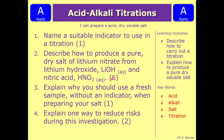Question three says: explain why you should use a fresh sample without an indicator when preparing your salt. Think back to when I explained why we had to do a new titration without the indicator — that'll give you your answer. Question four, a two-marker, says: explain one way to reduce the risks during this investigation. Think about the hazards associated with acids, alkalis, and evaporating, and what can be done to reduce them. Pause the video now and we'll look at the answers in a moment.